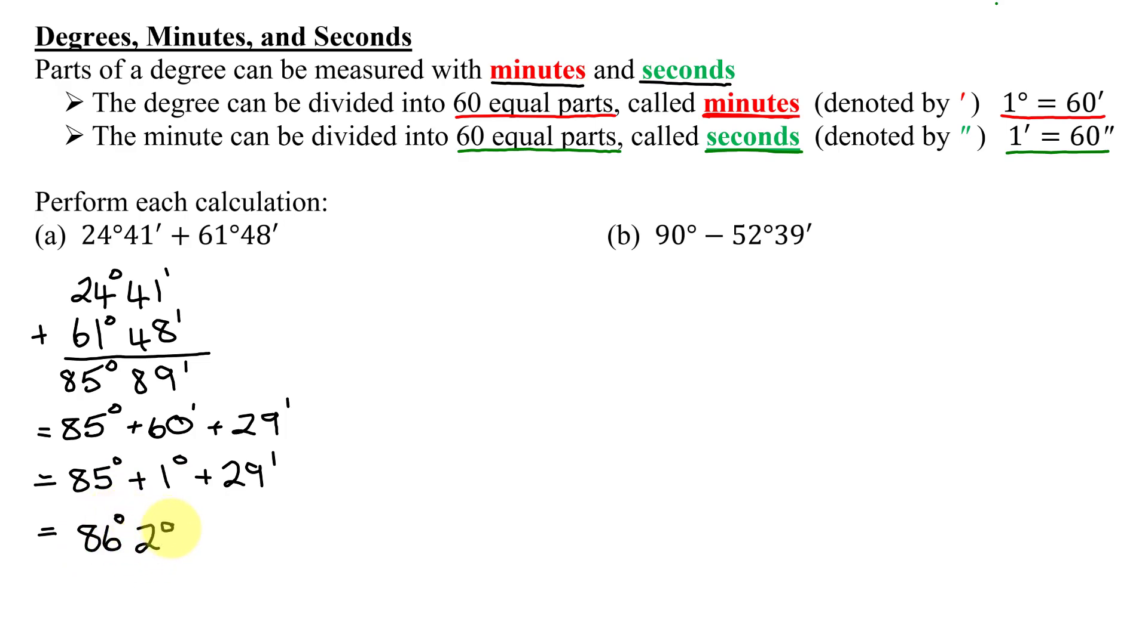In part B, I'm going to do 90 degrees minus 52 degrees 39 minutes. So I'm going to have problems with this one because I have 39 minutes, but I don't have any minutes on the 90 degrees to subtract it from. So I'm going to have to borrow 1 degree from my 90 degrees.